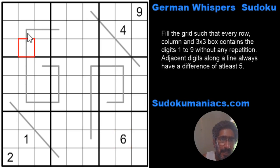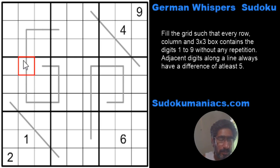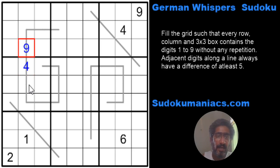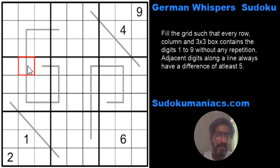So what that means is anywhere in the middle of the line along the path, I can never have a 4 or a 6. Now this is only for a horizontal or vertical line. For a diagonal line going across two cells, I can definitely have them — we will come back to that later. But on this line, if I have a 4, I would require a 9 on either side to satisfy the constraint of a minimum difference of 5, which is just not possible.